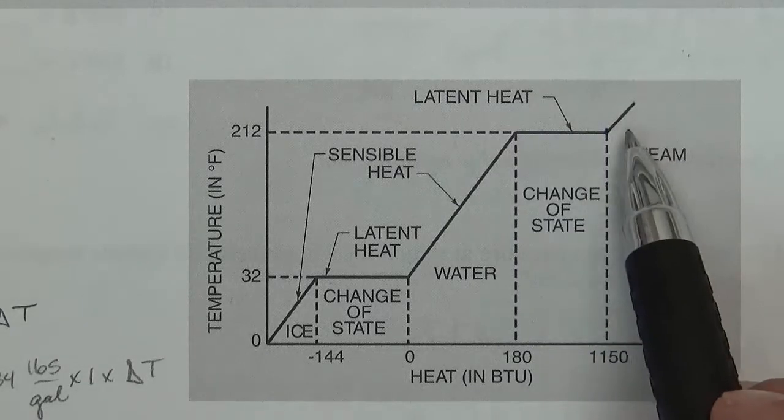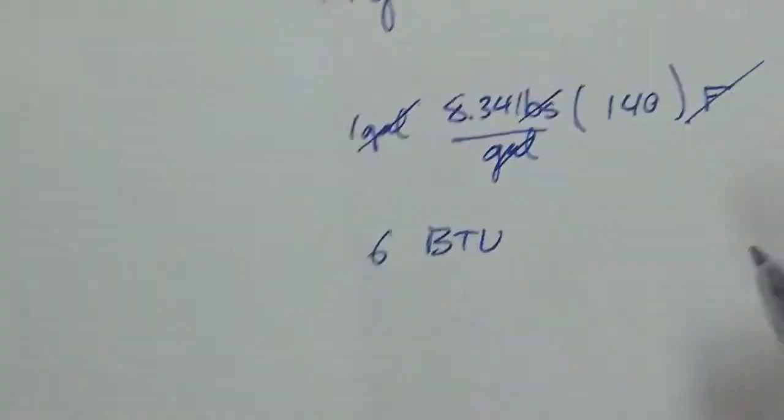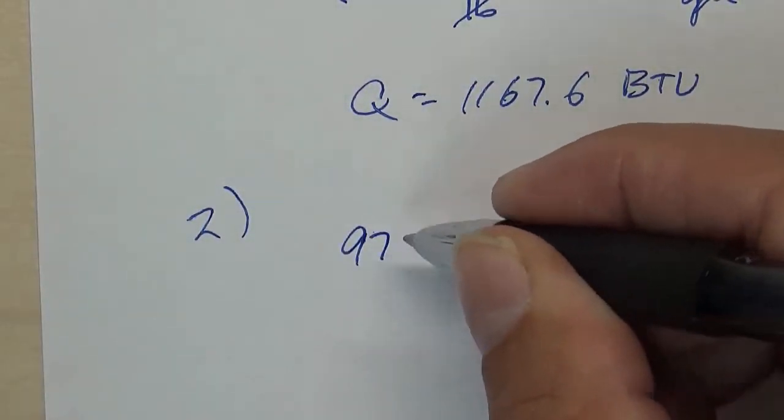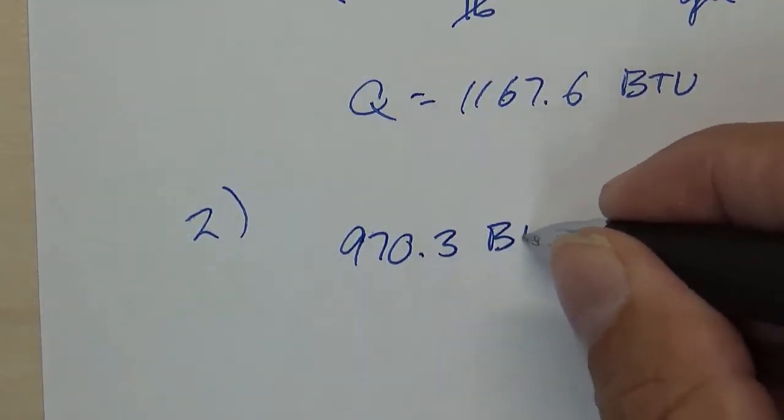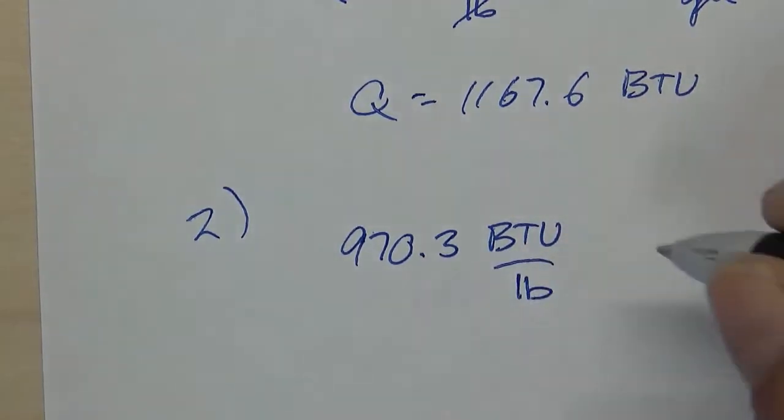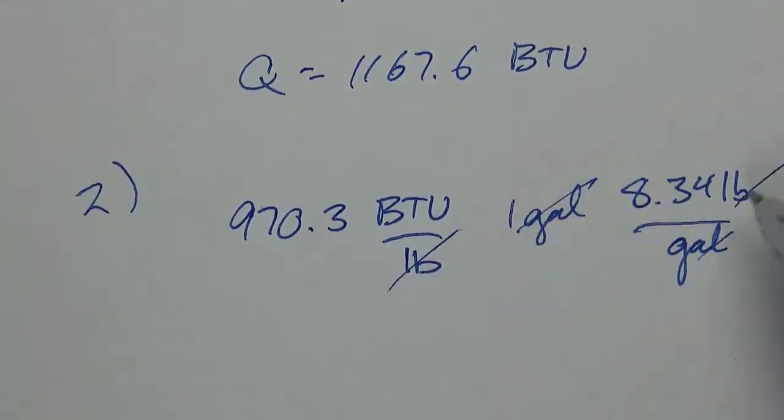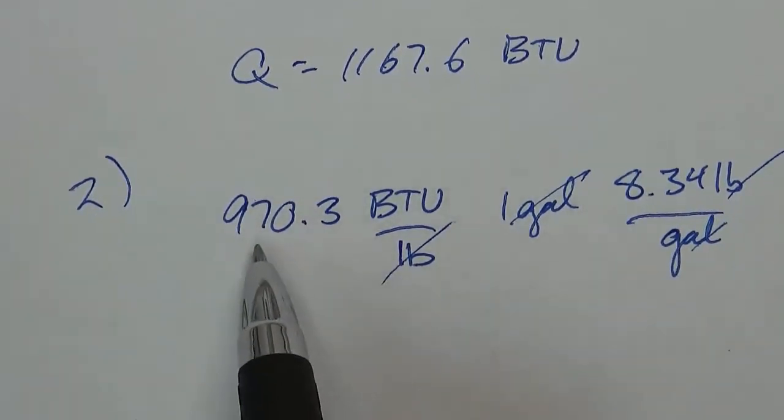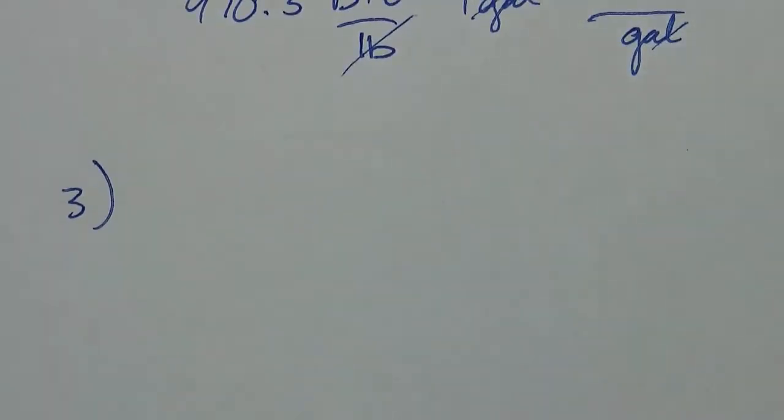Water at 212 degrees to steam at 212 degrees, and we know that's 970 BTU per pound. So I'm just going to take 970 BTU per pound, and I have one gallon, so I'm going to have to put in my 8.34 pounds per gallon again. Gallons will cancel, pounds will cancel. So the answer is going to be 970 times 8.34.